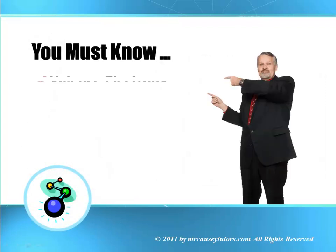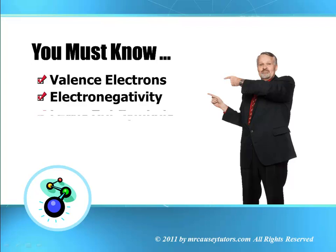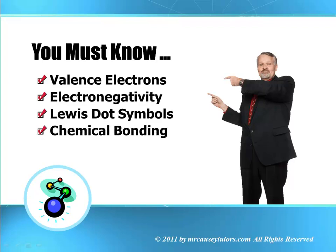And you must know valence electrons, electronegativity, Lewis dot symbols and chemical bonding. If you don't know these then go back and look at some of the previous lessons and get to know especially Lewis dot symbols and electronegativity.